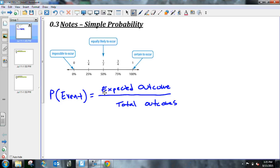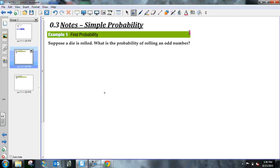Example one: suppose a die is rolled. What is the probability of rolling an odd number? So here's what you've got. If you roll a die, you can get a 1, 2, 3, 4, 5, or 6. So if you roll a die, you've got six total outcomes.